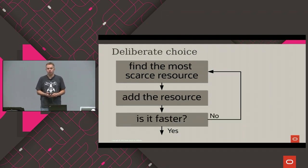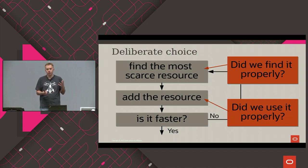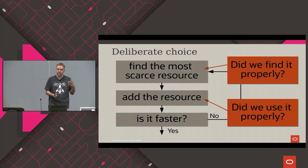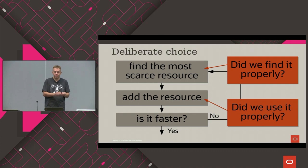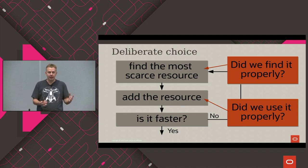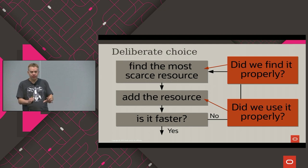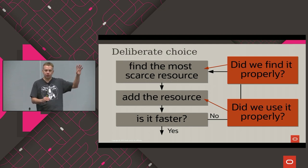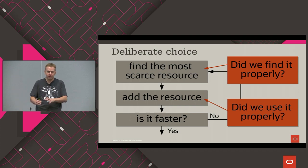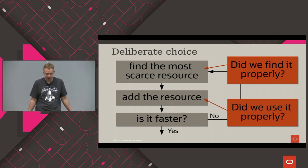A better strategy is trying to understand which resource is insufficient. Two key questions: did you identify that resource properly — did you make mistakes in your assumptions? And even if you added that resource, can your program actually use it? For example, I ran an application on a single-core machine, found 100% CPU utilization, then ran it on a multi-core machine — but nothing happened because my application is single-threaded.